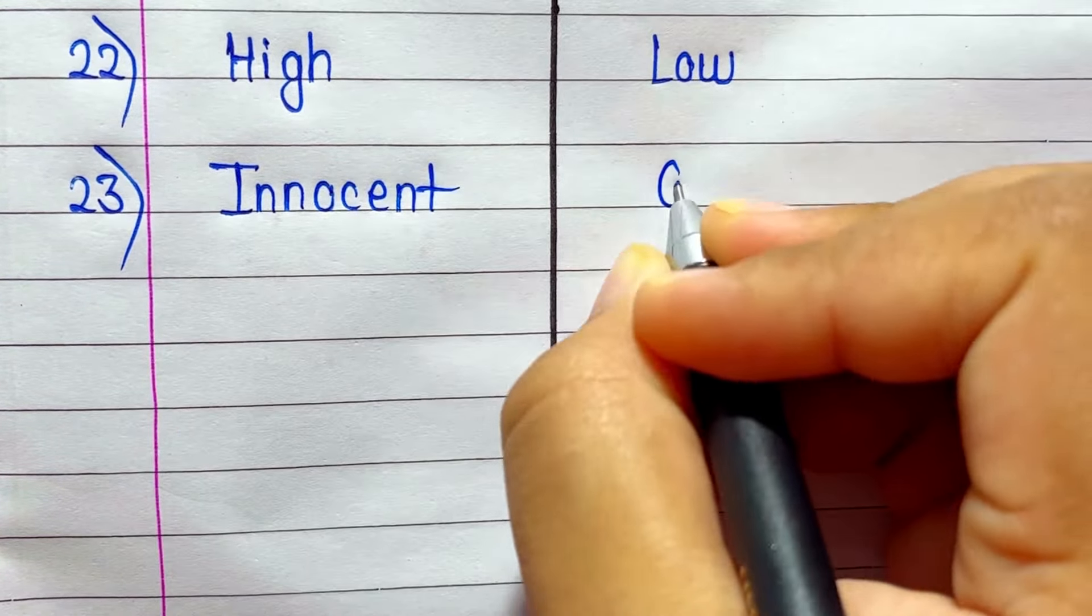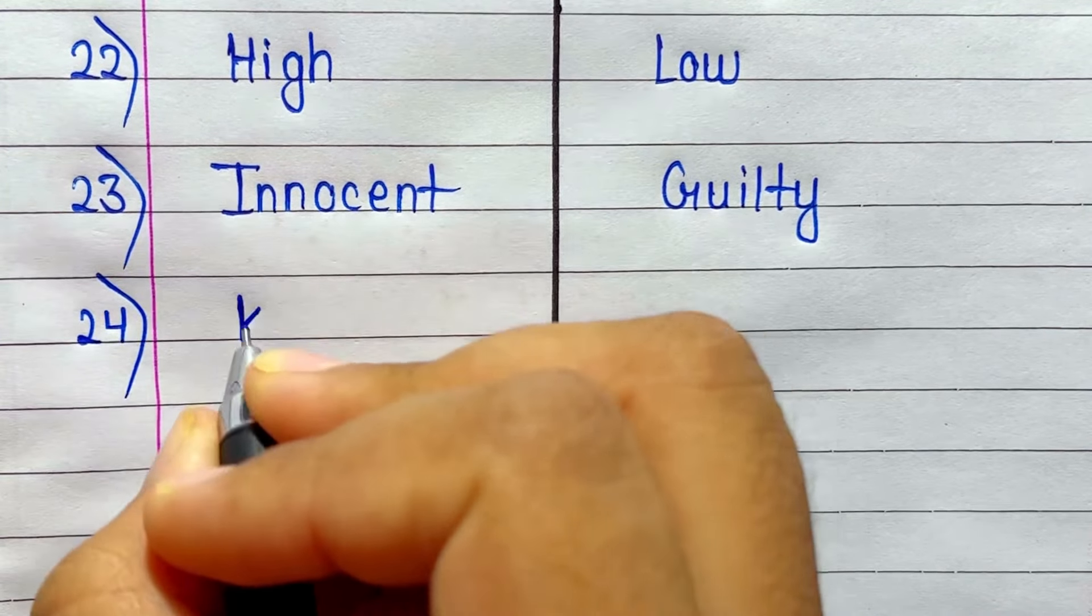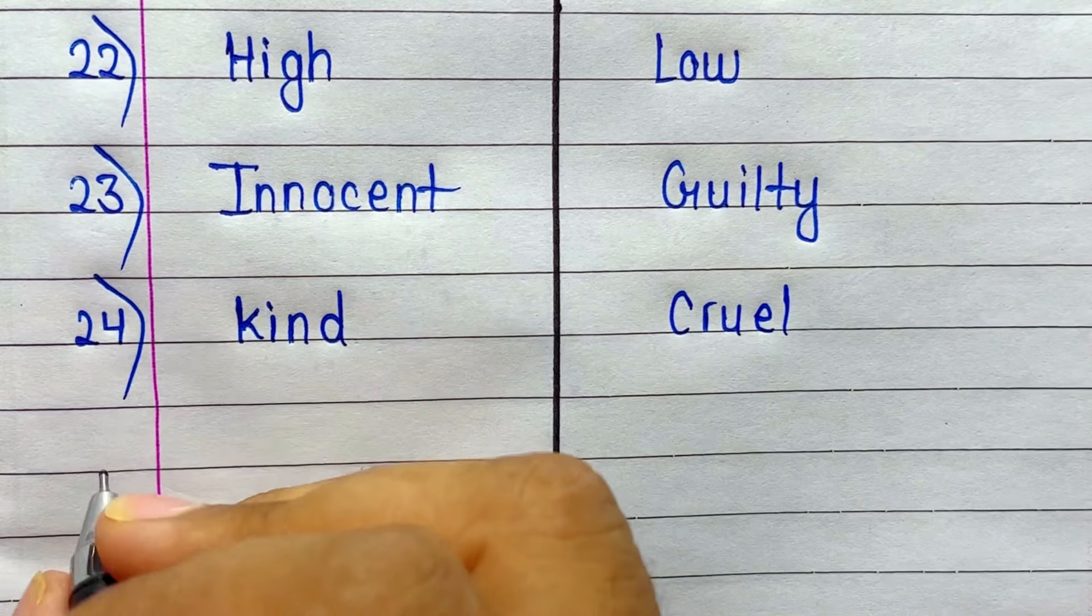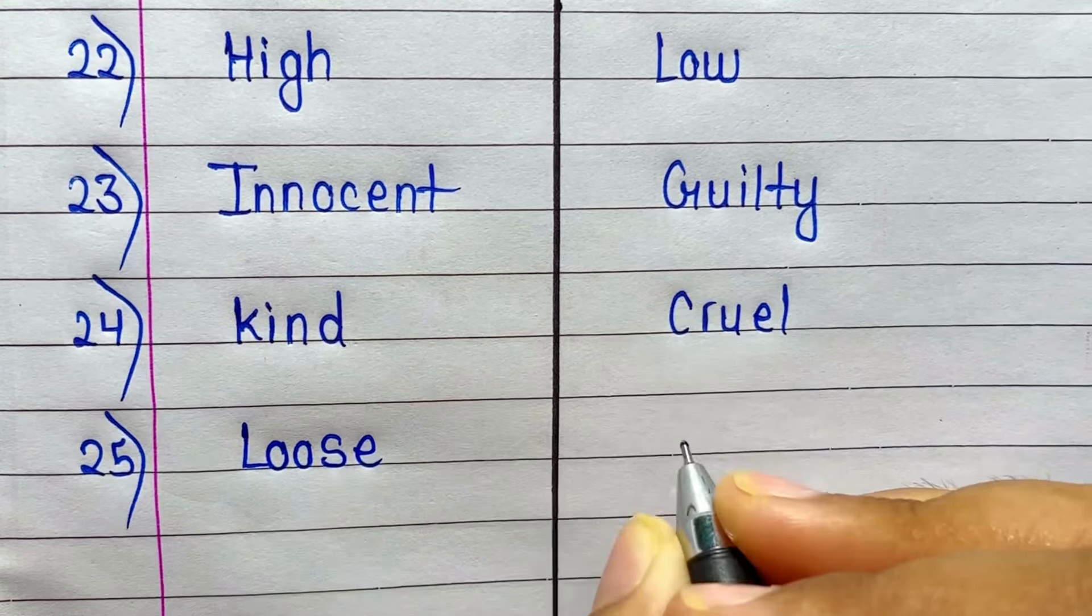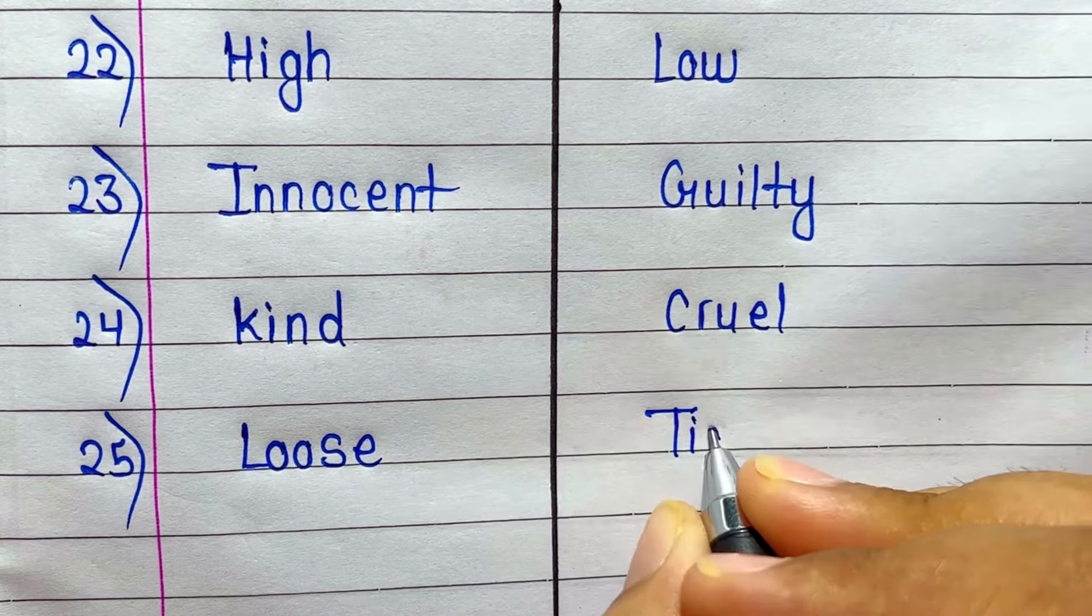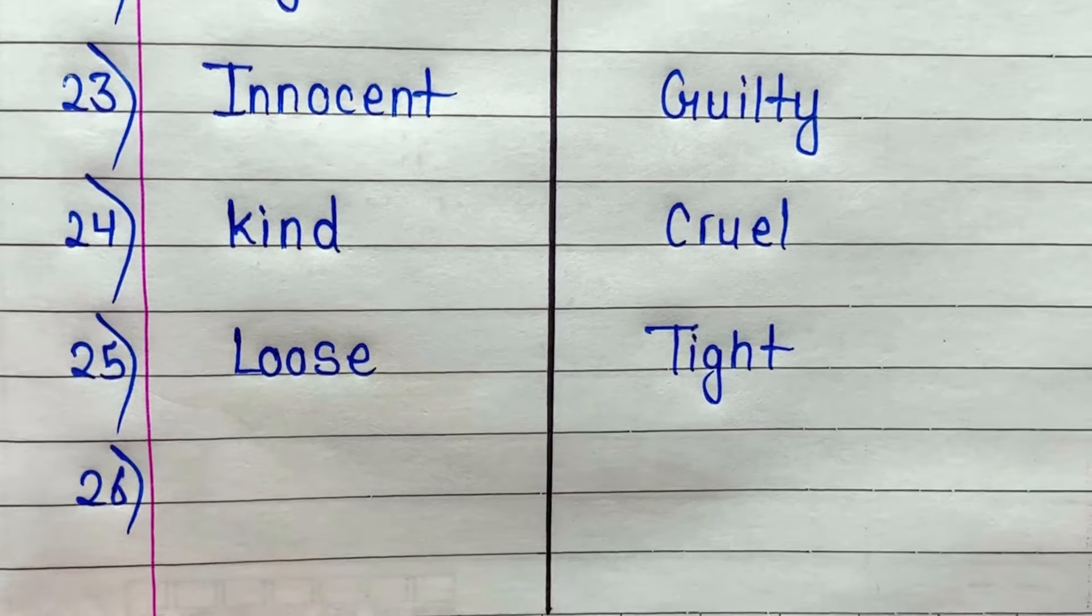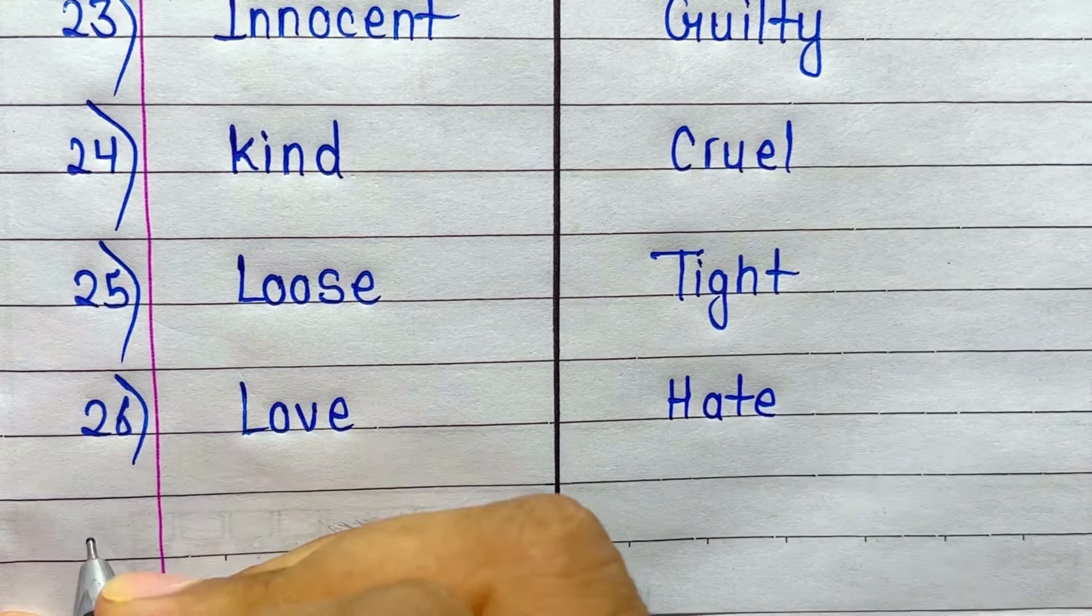Innocent. Antonym of Innocent is Guilty. Kind. Antonym of Kind is Cruel. Antonym of Loose is Tight. Antonym of Love is Hate.